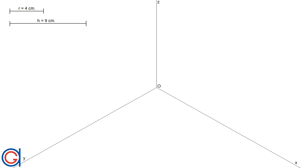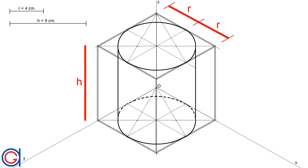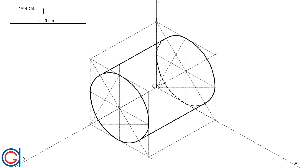We are going to start by constructing a rectangular prism in which we are going to inscribe the cylinder. The dimensions of the rectangular prism are the same height as the cylinder, and the outer sides are double the given radius, as shown in red lines on the screen. We are going to learn how to construct it aligned to the z-axis, but you can also draw it aligned with the x-axis or the y-axis — the process is exactly the same for all three axes.